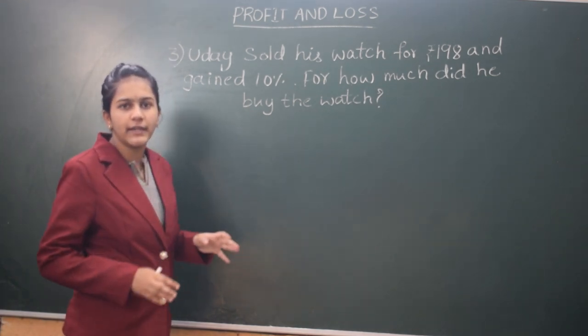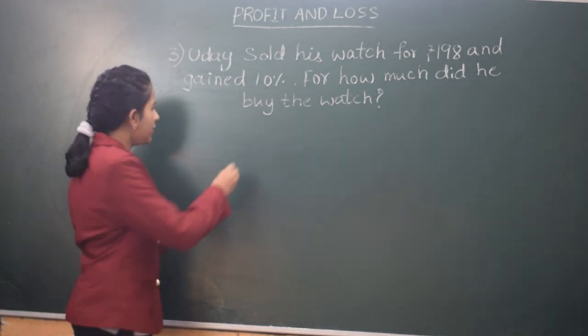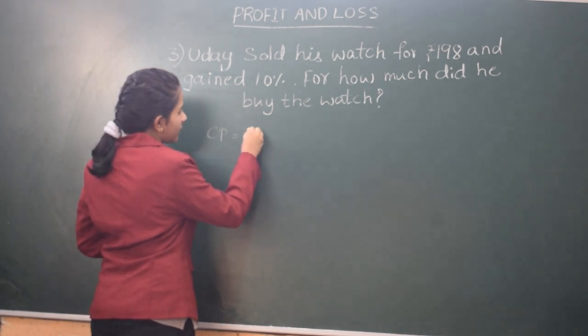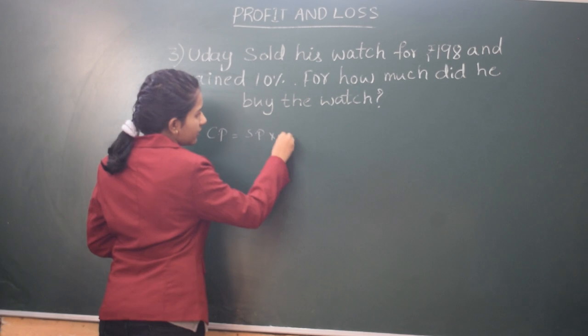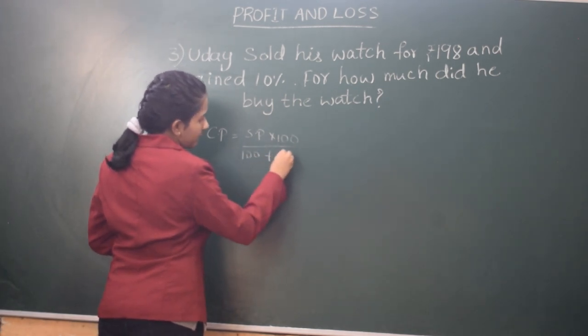In previous sums, we would find selling price. But in this question, we should find the cost price. Cost price has a formula that is selling price into 100 divided by 100 plus gain percent.